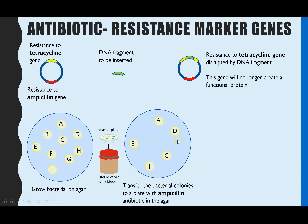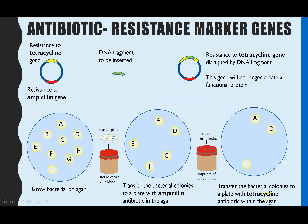But all that has told us is that the colony contains the plasmid. We don't know if it contains the original plasmid or the recombinant plasmid. So the last step is we use the sterile velvet block again, take the imprint, and put it onto a final petri dish which has tetracycline antibiotic dissolved within the agar. Any colonies that grew on both ampicillin and tetracycline must be resistant to both, meaning they must be the original plasmid which does not contain the gene of interest.